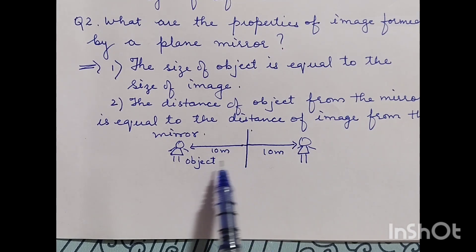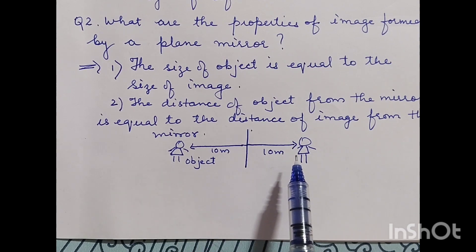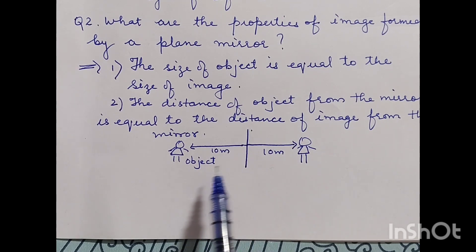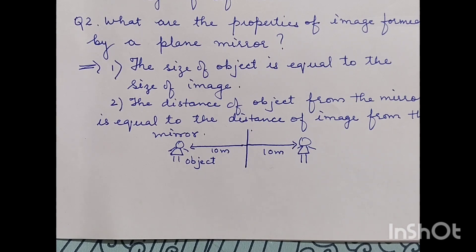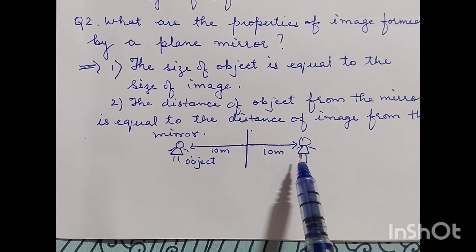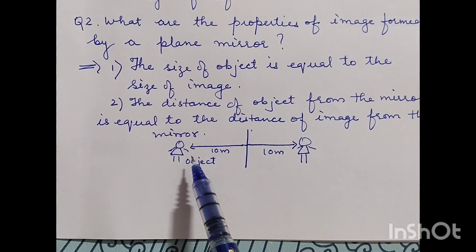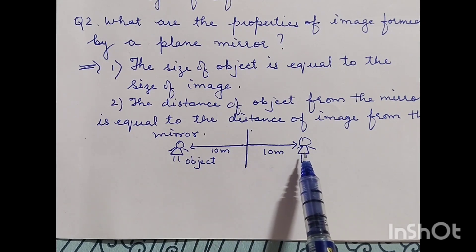You can find this distance easily. If your concept is clear, you can solve one or two mark questions. For example, if the object is 10 meters from the mirror, the image distance from the mirror is also 10 meters. Do not get confused when asked about the distance of the image from the object — if both are equidistant from the mirror, the total distance between object and image would be 20 meters.